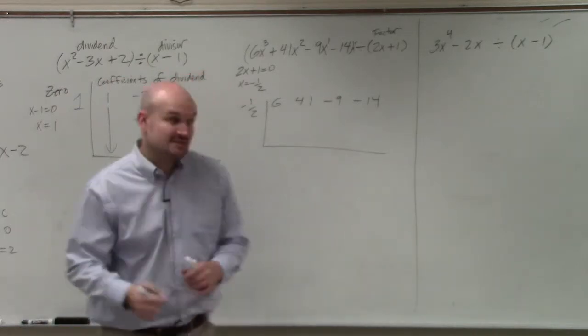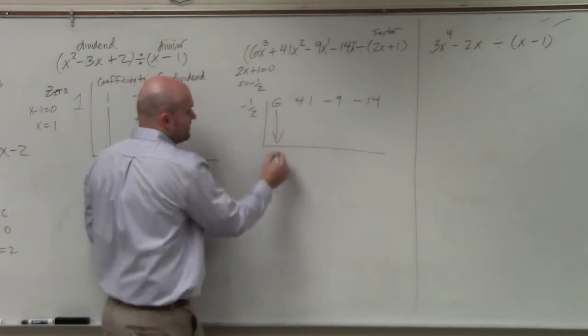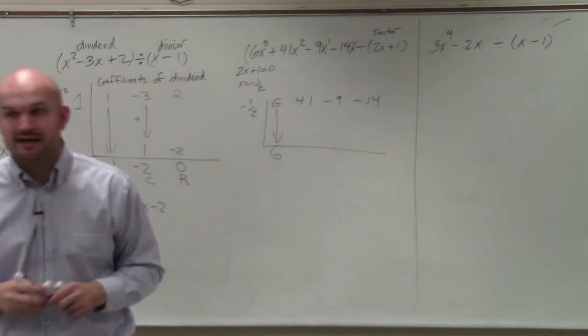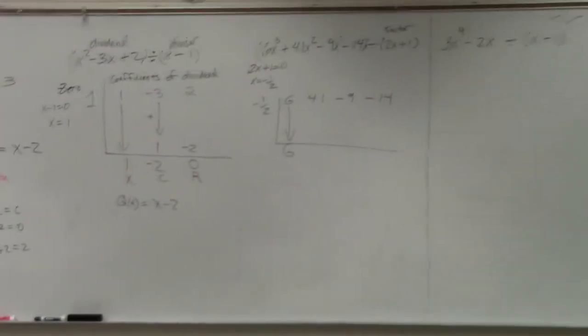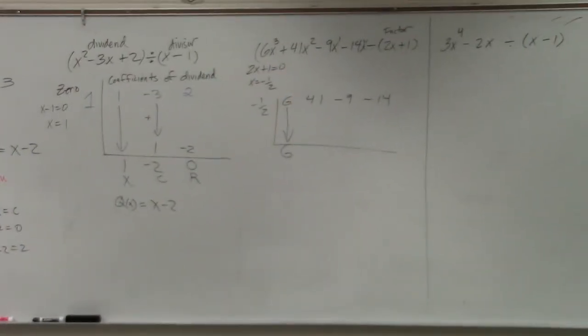So when you take the freebie, you bring down the 6 first. You don't have to do any math to get the freebie. All you simply do is take down the first value.